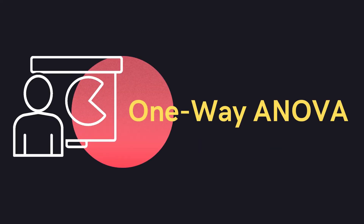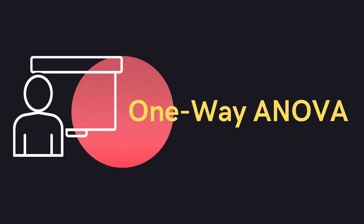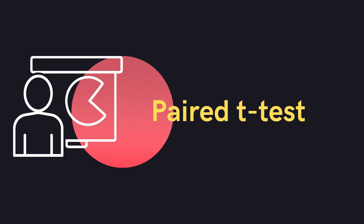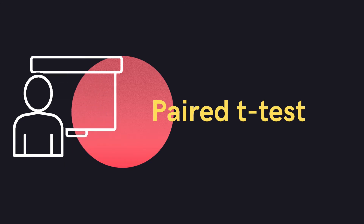We go for the one-way ANOVA test when we want to find out whether the difference in means among students in three or more groups is significant. For example, the three groups could be three different income groups, and we want to find out whether marks obtained by students across those income groups are different. In that case, we go for the one-way ANOVA test.